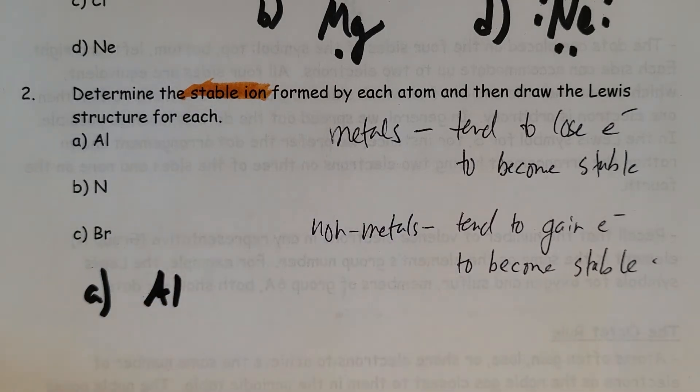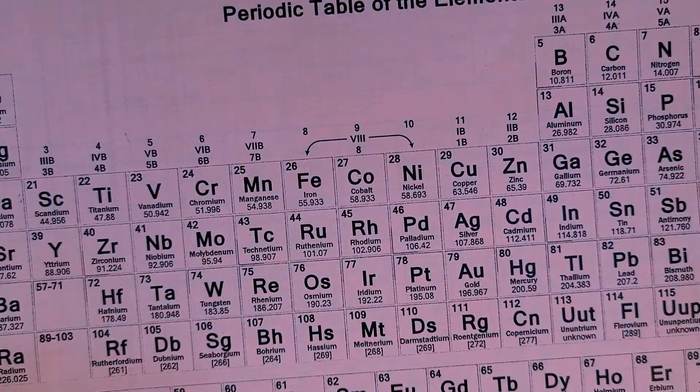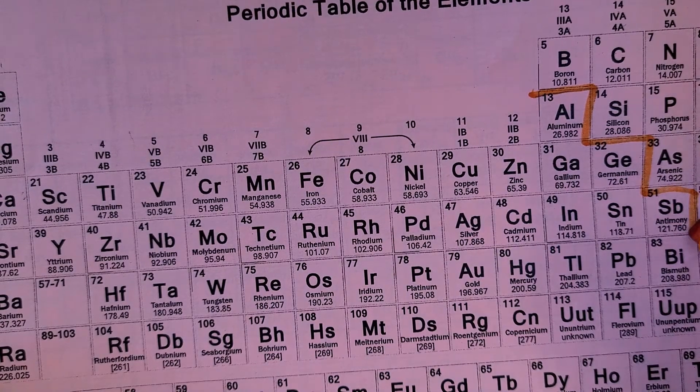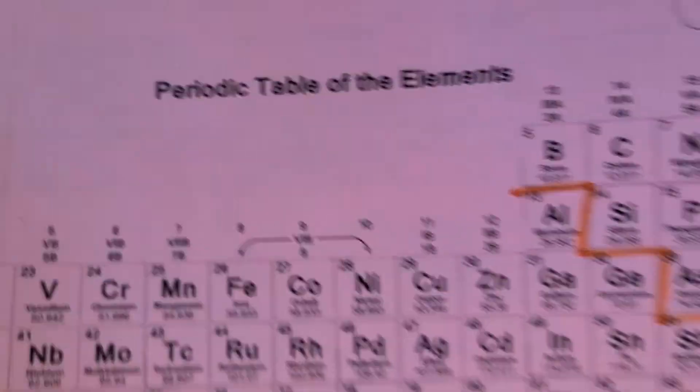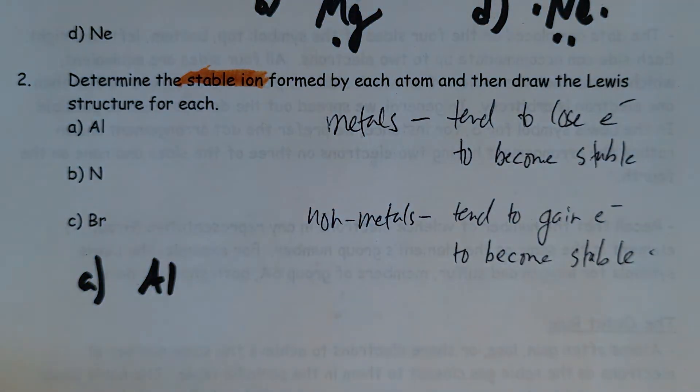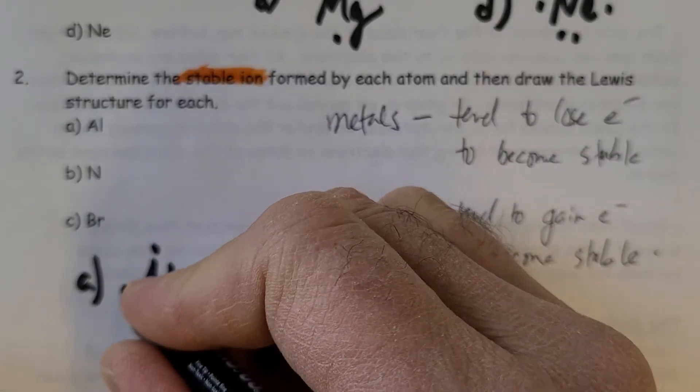If you look at aluminum, aluminum is Group 3. Notice it's on the left-hand side. Don't forget we have that staircase right here, which separates metals from non-metals loosely speaking. There are exceptions to that, but aluminum has three electrons.